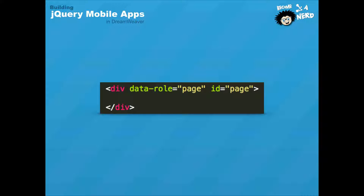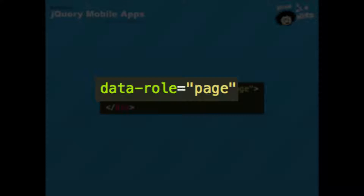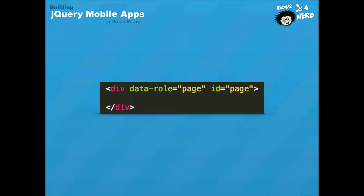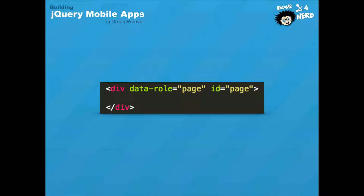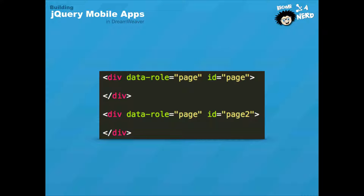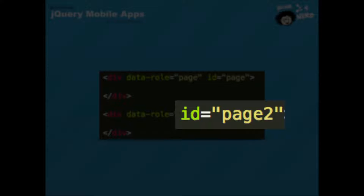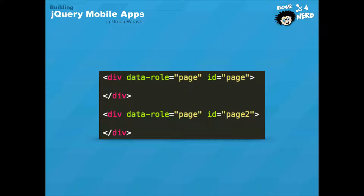In jQuery Mobile you're working mainly with pages. The way you do this is within a div tag you assign an attribute of data-role equals page, and then you give each page its own ID — in this case we're naming it 'page'. Any additional pages after this will need to be named page2, page3, or whatever you want. Additional div tags outside the first page get a different ID, but the data-role still equals page. This tells jQuery that the content within that div tag is going to be a page.